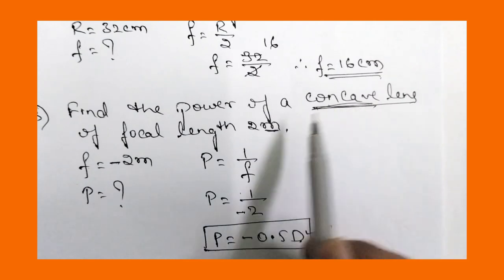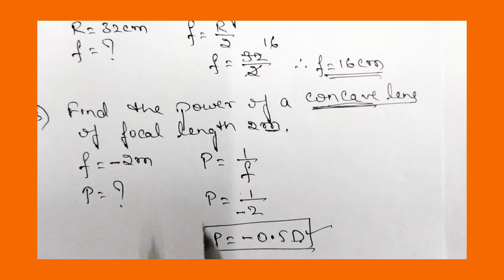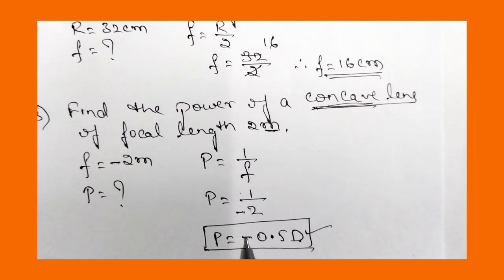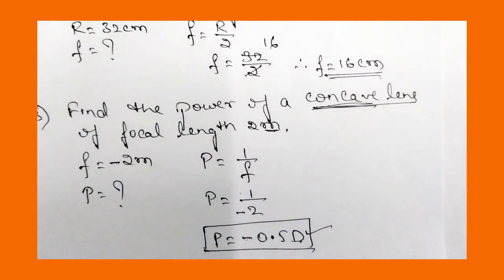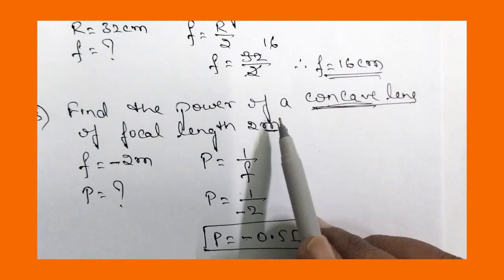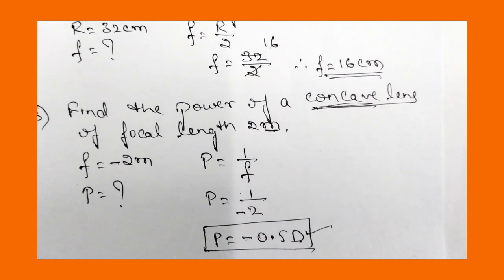The power of the lens is minus 0.5 diopter. If the power of the lens is minus, it is a concave lens. If the power is plus, it is a convex lens. So for this question, the power is minus 0.5 diopter, which means it is a concave lens. That completes the third question.